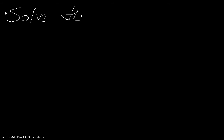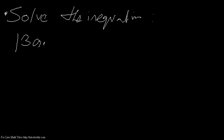Suppose we have to solve the inequality: mod of 3a plus 5 less than 9. We have to solve this inequality. How do we go about this?